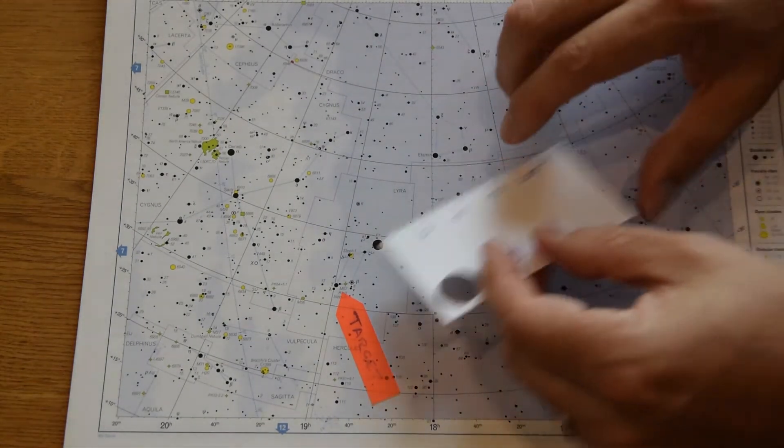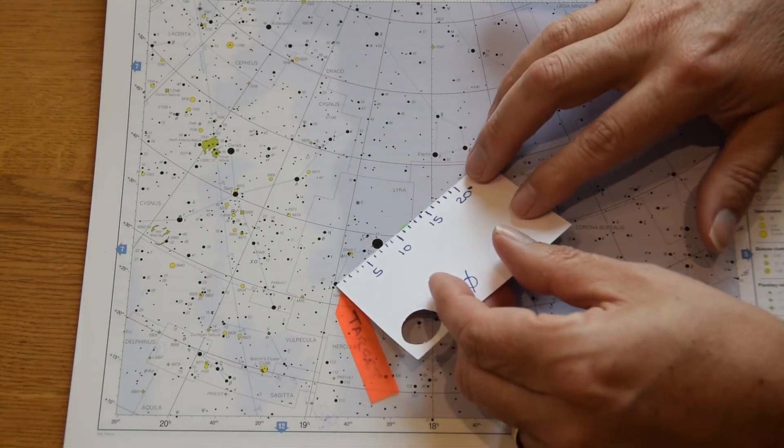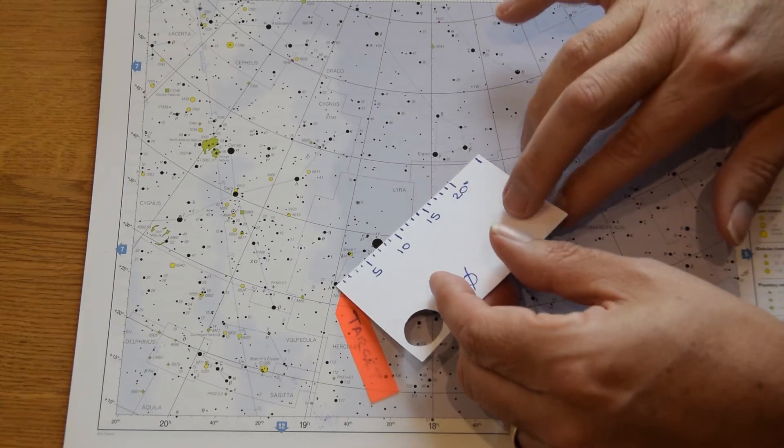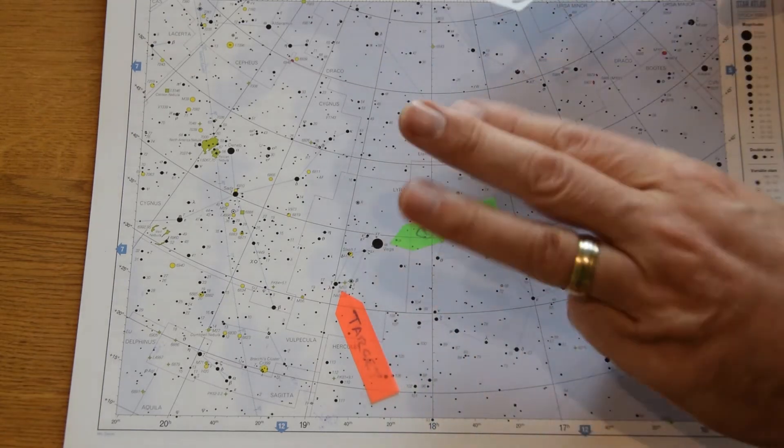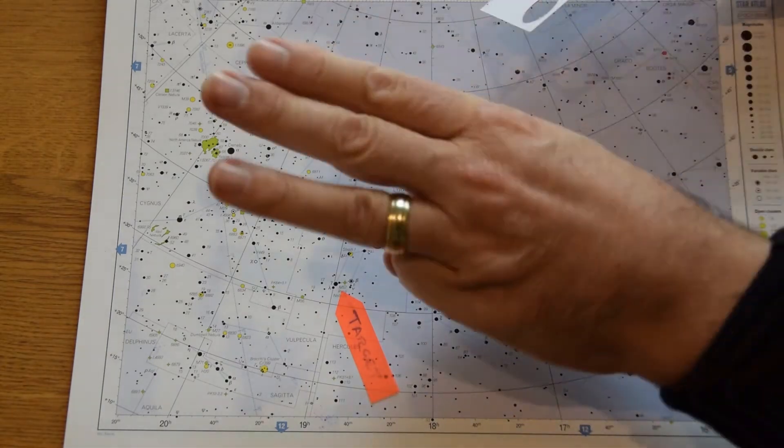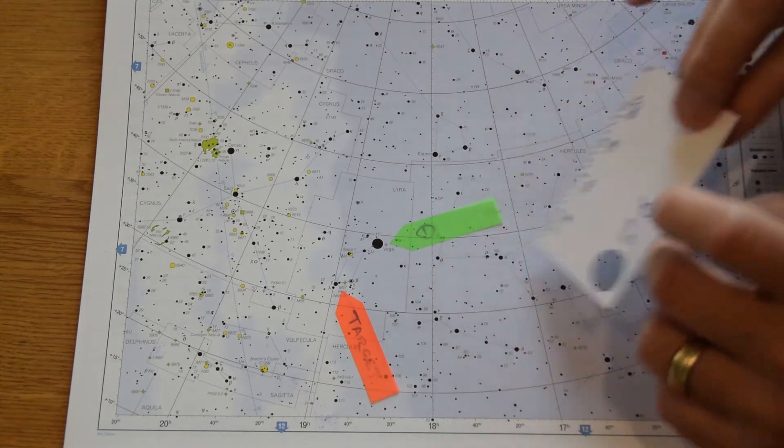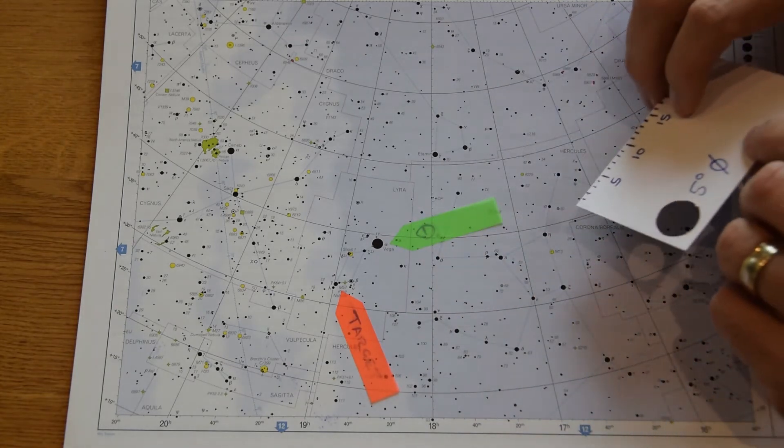And if we were to actually measure it, what you can see is from one end to the other it's only around seven degrees. So it's not very big at all really. You know three fingers in width at arm's length is going to cover the whole thing. So that's the kind of size you're looking for if you're still struggling to find it.